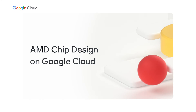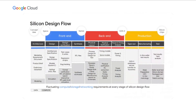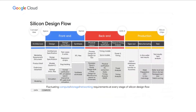Now let's turn to Rajiv at AMD to hear about how they're using Google Cloud's full HPC platform to accelerate their chip design process. My name is Rajiv Malhotra, and it's my pleasure to talk about how AMD is leveraging the Google Cloud platform for chip design. When we look at the silicon design flow, you can break it down into three major sections: the front end, the back end, and production. Currently we have flows running on the Google platform in the front end — specifically design verification — and in the back end, running physical verification and power and timing analysis.